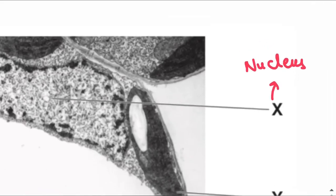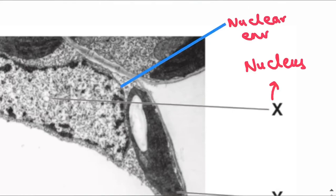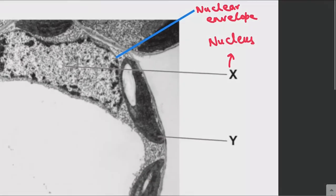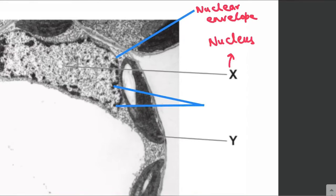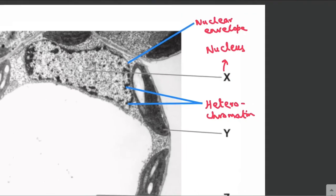If we have to label the parts of the nucleus, we can label this as the nuclear envelope, this dark region as the heterochromatin, and the light areas represent the euchromatin.